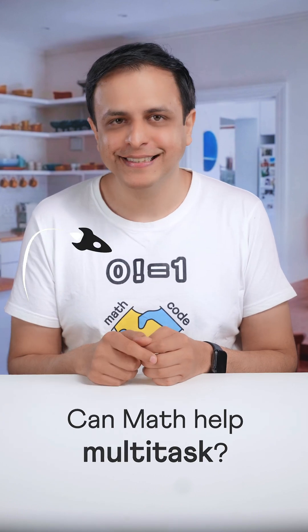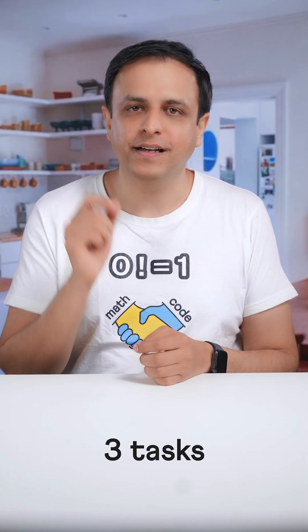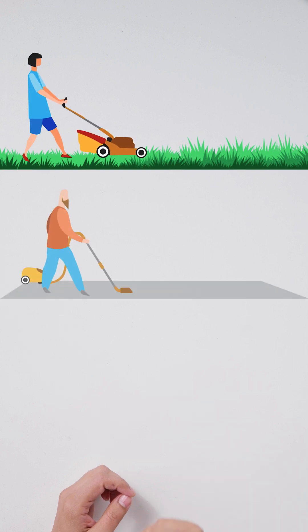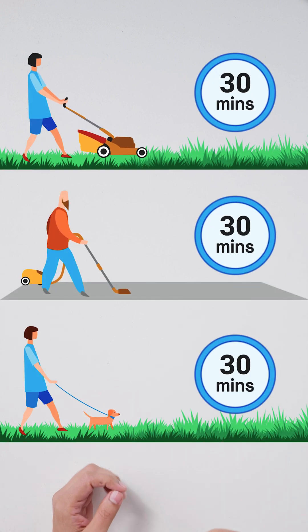Can math help you multitask better? A couple needs to do three tasks: mow the lawn, vacuum the floor, and walk their dog. Each takes 30 minutes.